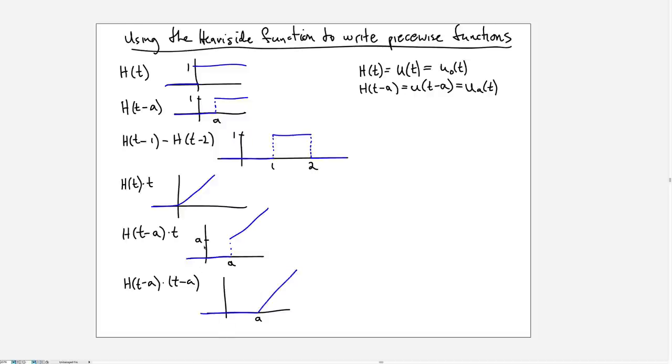This covers the basic ideas of how we're going to construct other piecewise functions using Heavisides. The difference allows us to get zeros outside an interval and one inside, and multiplying a Heaviside by another function allows us to get non-constant functions in the interval when the Heaviside equals 1.